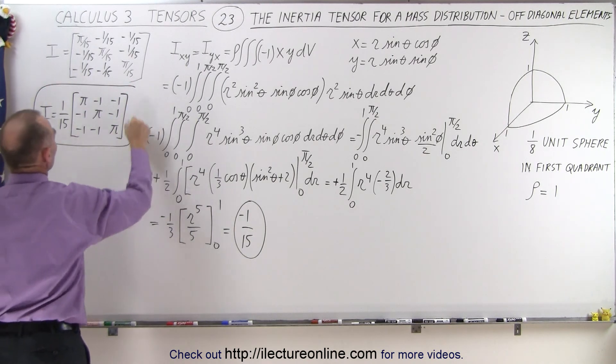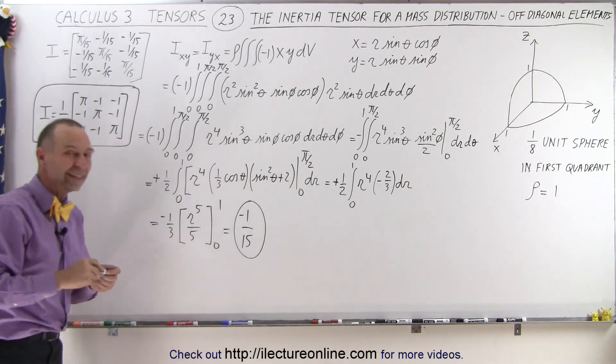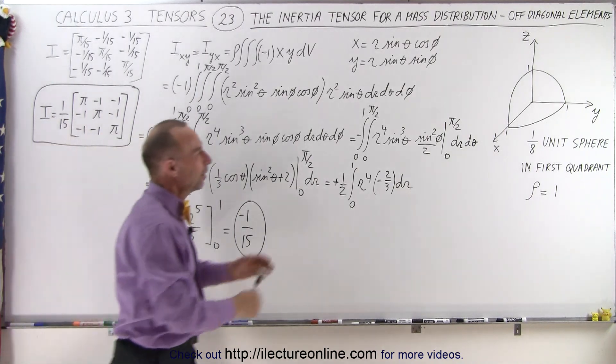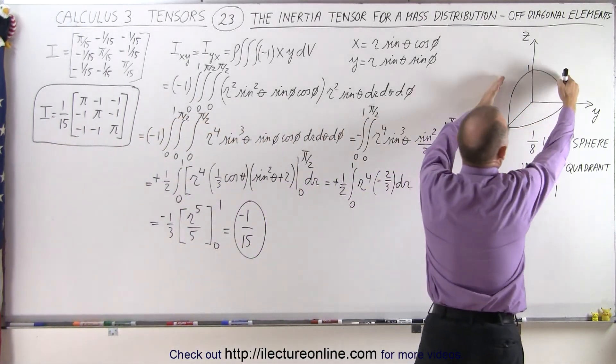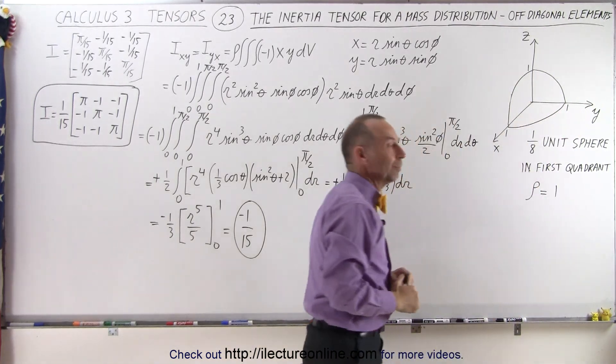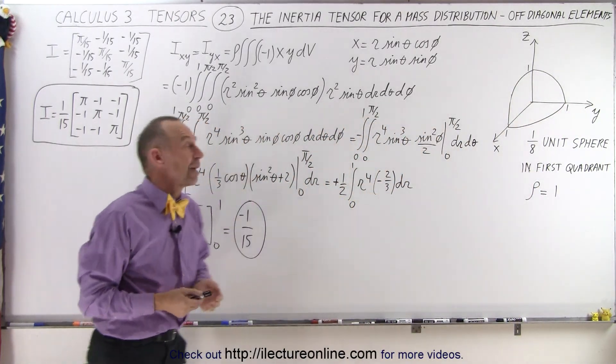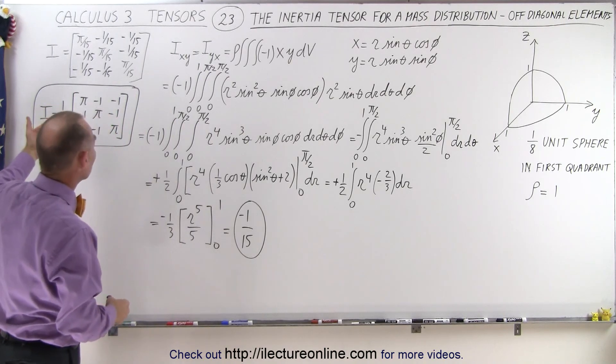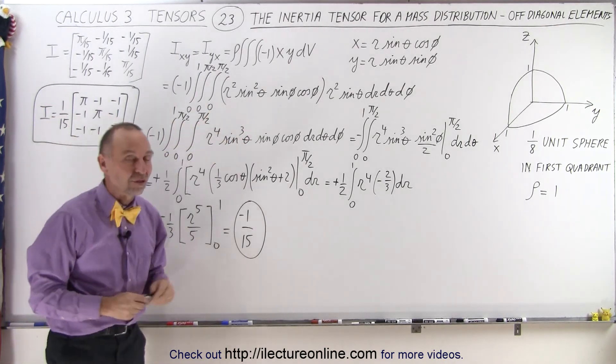And that will now be the inertia tensor, the inertia tensor for a 1/8 sphere located in the positive quadrant, with density equal to 1. So there's a very nice example of how to find the inertia tensor of a volume or a mass distribution.